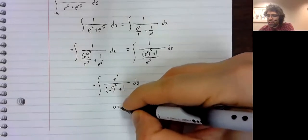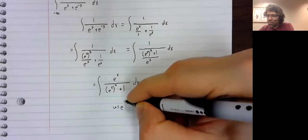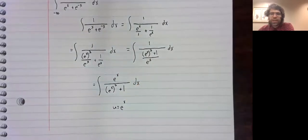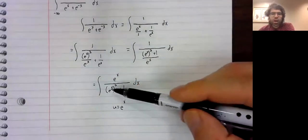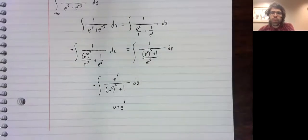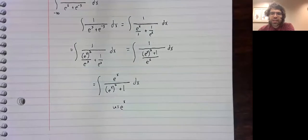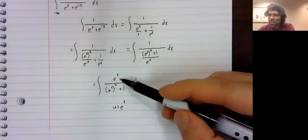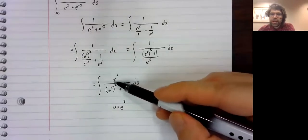There's no guarantees. If we let u equal e to the x, the denominator becomes u squared plus one. That's exactly what we need for an arc tangent. But we need to get rid of this in the numerator.